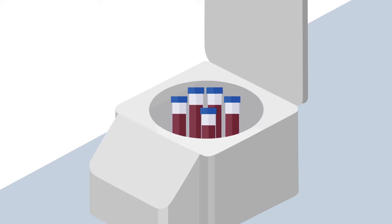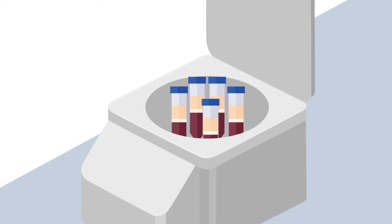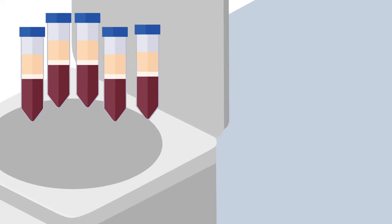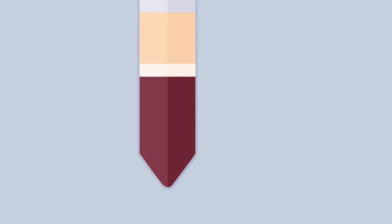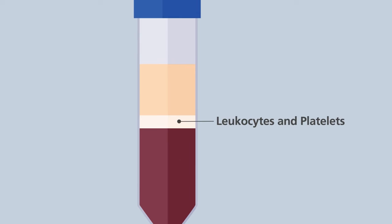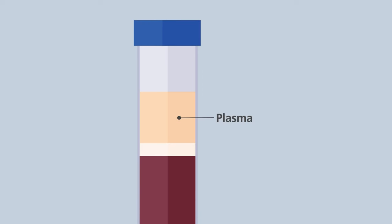The key step in generating a Buffy Coat is to centrifuge the blood sample. During centrifugation, the blood is separated into three different fractions based on the density of its components. The bottom fraction contains erythrocytes, or red blood cells. The middle fraction, which contains leukocytes and platelets, is referred to as the Buffy Coat. And the top fraction contains plasma.